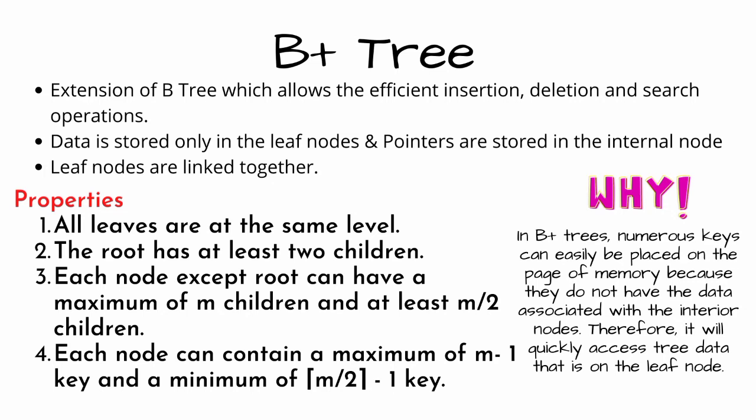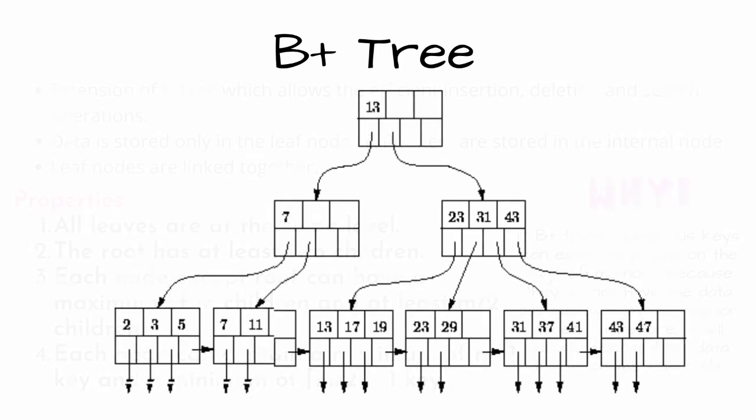And the fourth property, each node can contain a maximum of M minus one keys and a minimum of M by two minus one keys. So this is an example of B plus tree.